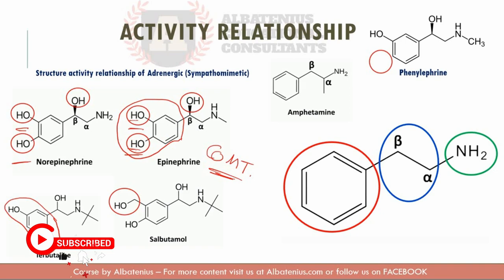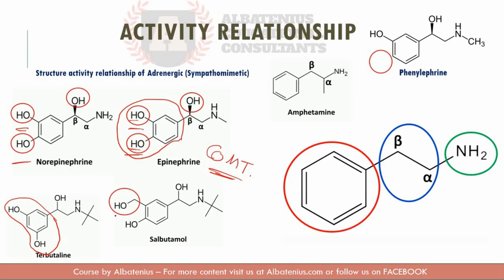Removing the catechol and changing it to the resorcinol will make this product resistant to COMT metabolism. So if you get a question showing epinephrine, norepinephrine, terbutaline, and a fourth structure asking which is most resistant to COMT, it will be the terbutaline. Everything with a catechol will be susceptible to COMT degradation.